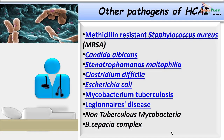Other important organisms causing healthcare associated infections include MRSA causing bacteremia and septicemia especially in catheterized patients, as well as Candida albicans, Stenotrophomonas maltophilia, Clostridium difficile, Escherichia coli, Mycobacterium tuberculosis, non-tuberculous mycobacteria, and Legionella.